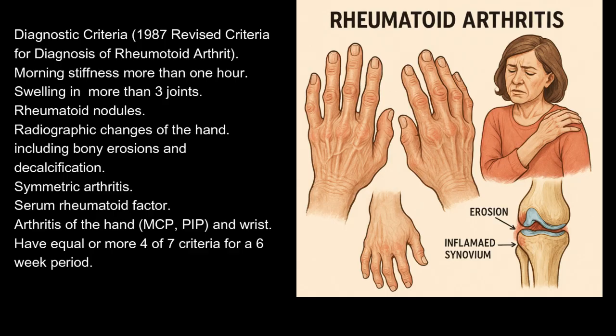The 1987 revised criteria for diagnosis of rheumatoid arthritis include: morning stiffness more than one hour, swelling in more than three joints, rheumatoid nodules, radiographic changes of the hand including bony erosions and decalcification, symmetric arthritis, serum rheumatoid factor, and arthritis of the hand (MCP, PIP, and wrist). A diagnosis requires four or more of seven criteria for a six-week period.